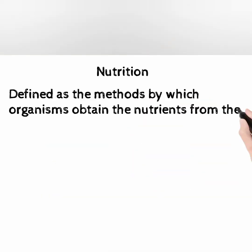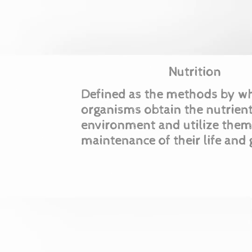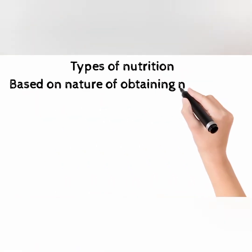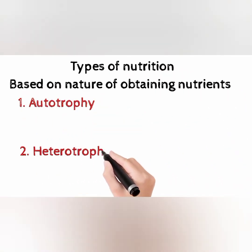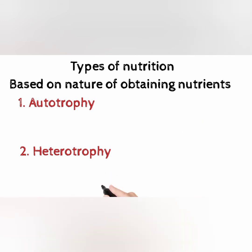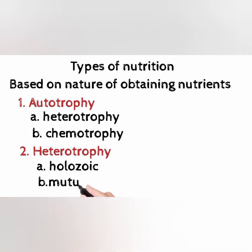Organisms utilize nutrients for the maintenance of their life and growth. Types of nutrition based on the nature of obtaining nutrients: 1. Autotrophy — (a) Phototrophy, (b) Chemotrophy; 2. Heterotrophy — (a) Holozoic, (b) Mutualism, (c) Parasitism, (d) Saprophytic.